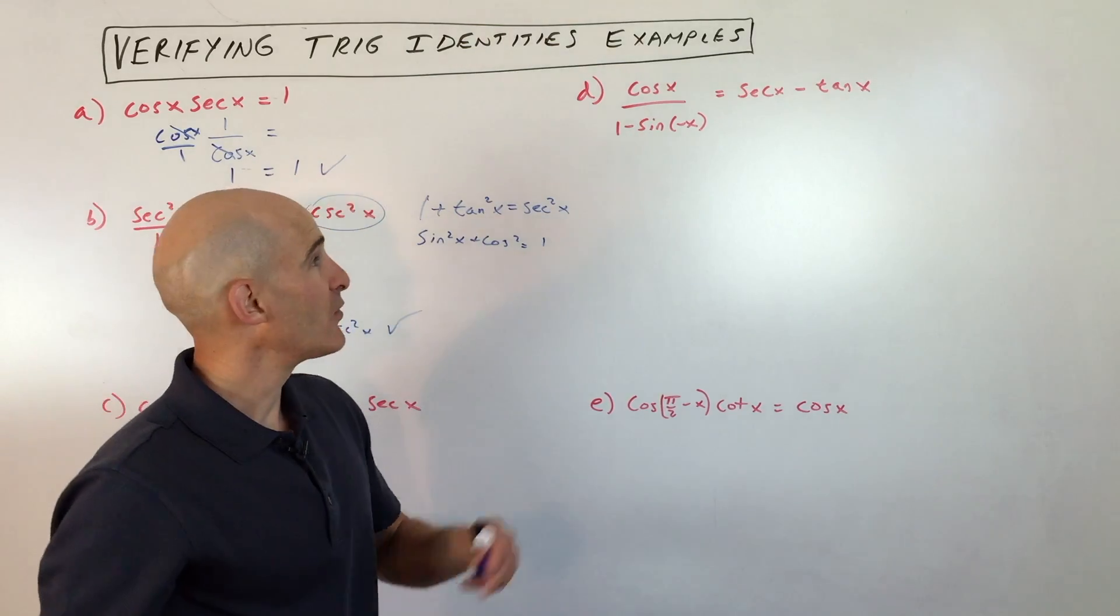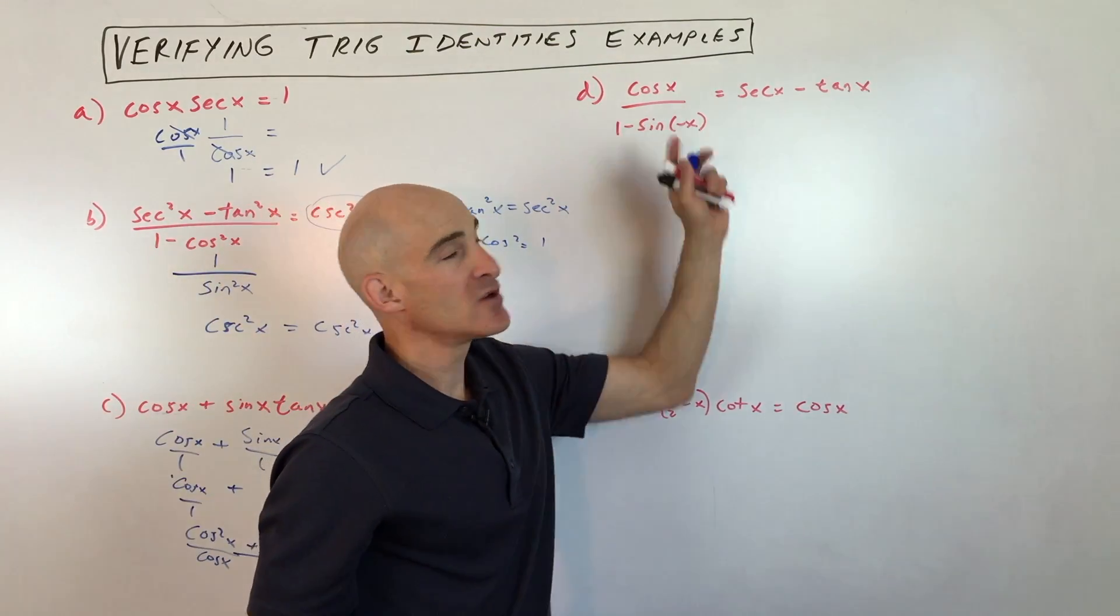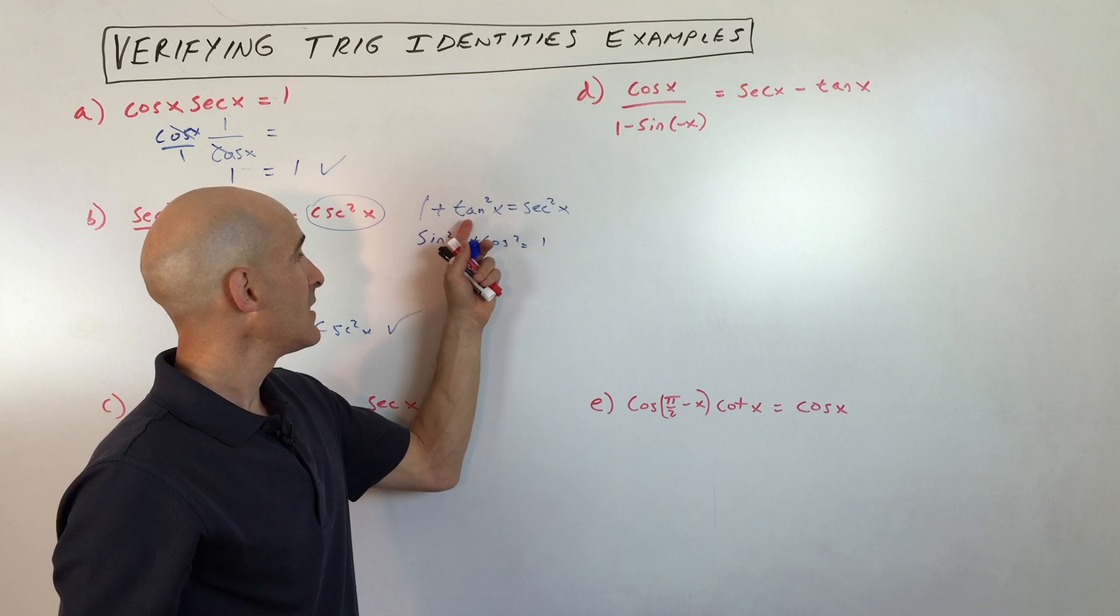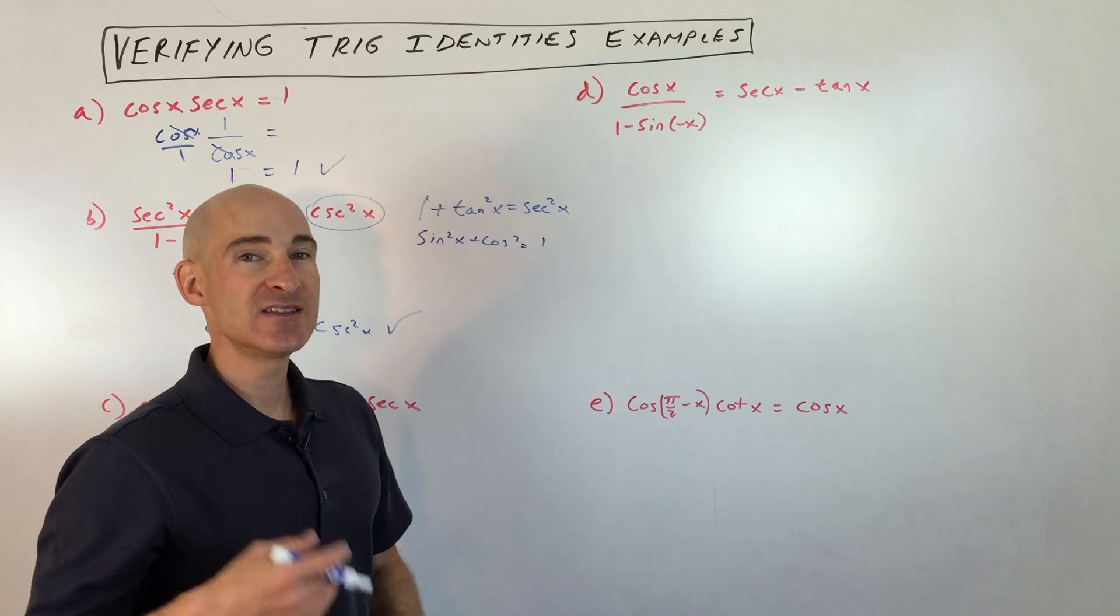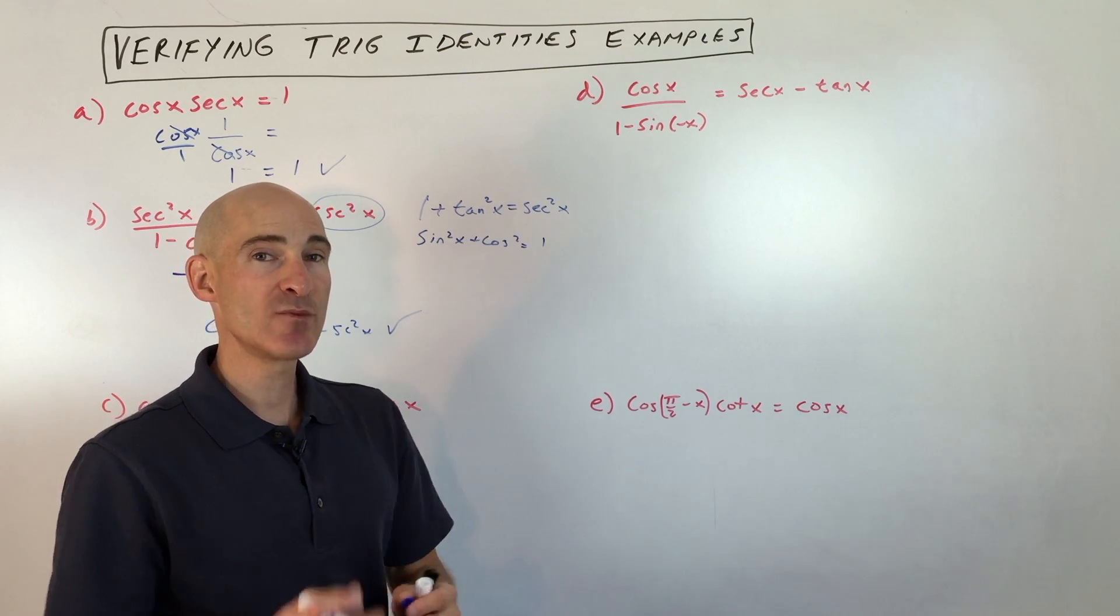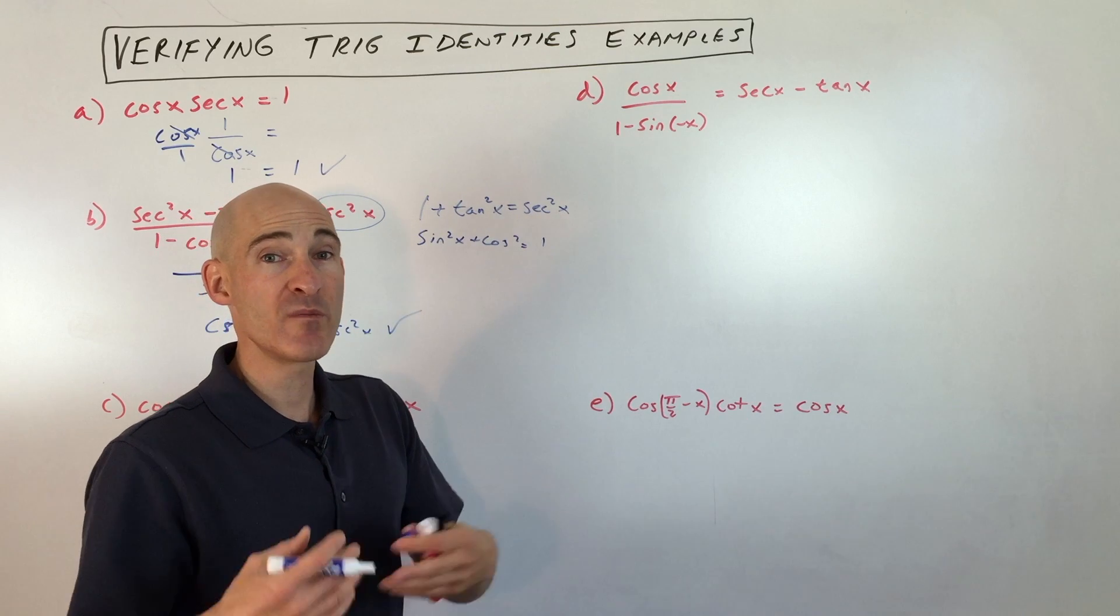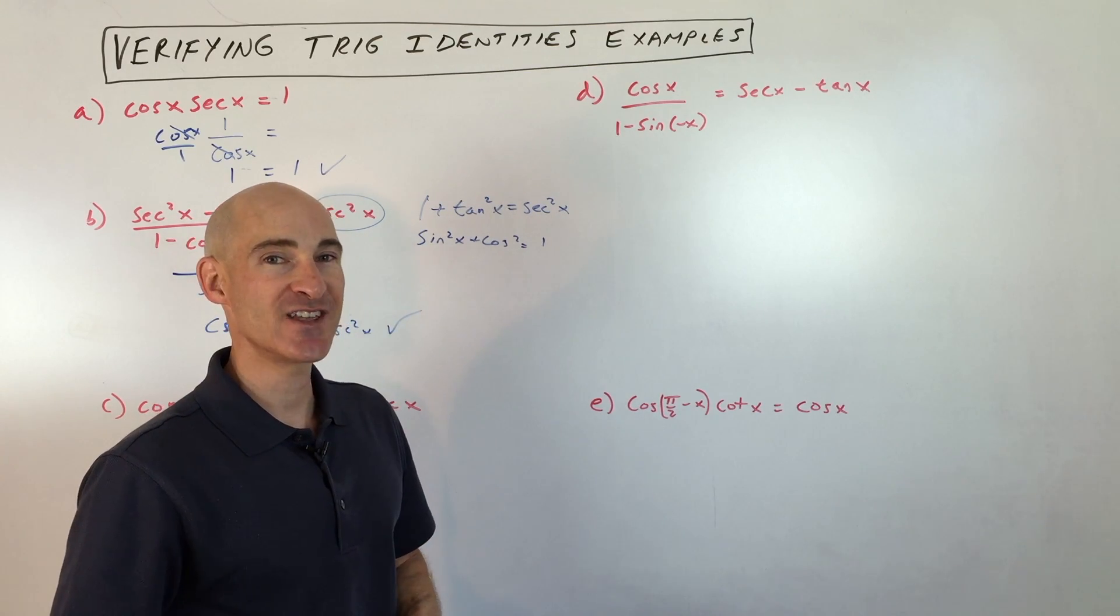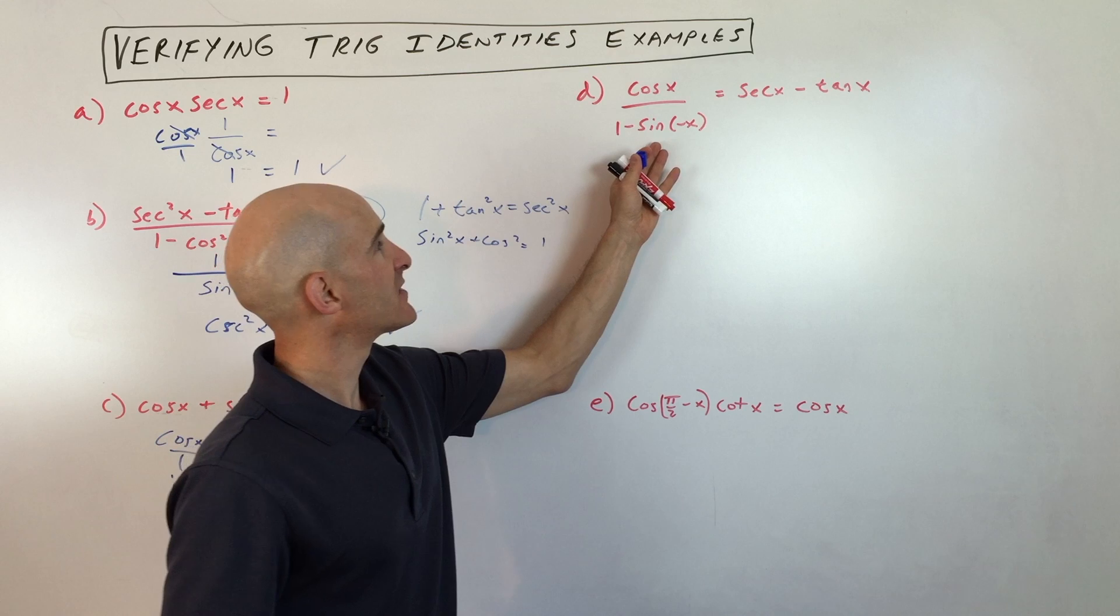So let's take a look at another example. Now one thing I want to mention is, as you're doing these, you're going to want to memorize some of the basic Pythagorean trig identities and some of the basic identities because you're going to be using them all the time. And the more that you know them and memorize them, the more they're going to jump off the page at you. But let's go ahead and take a look at this one here.